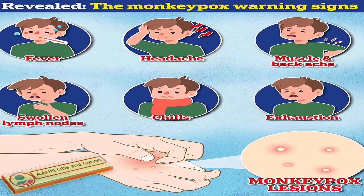This picture also shows the monkeypox warning signs, which include fever, headache, muscle and backache, swollen lymph nodes, chills, and exhaustion, along with the rash.